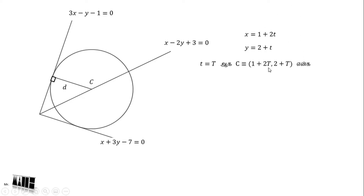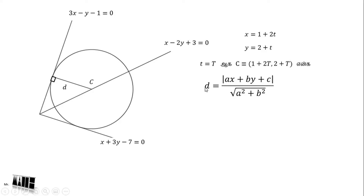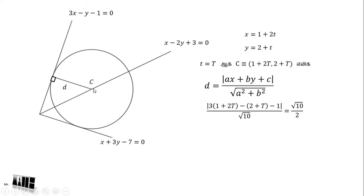This is 1 plus 2T, 2 plus T. In this code, D equals root of A squared plus B squared. So D is root of 10 over 2. That's why C is a point where x is 1 plus 2T and y is 2 plus T. So root of 10, and 10 over 2 is 5, and it equals 5T.